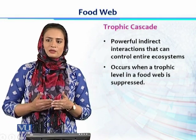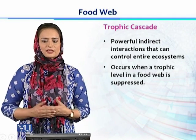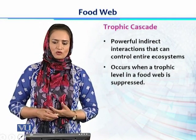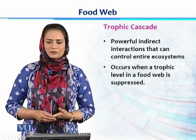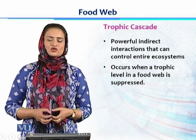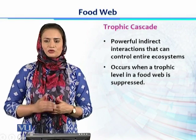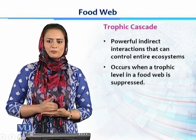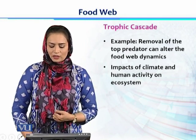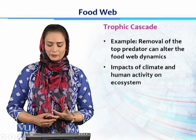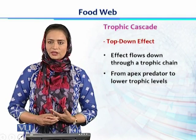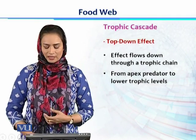Trophic cascade is actually a powerful indirect interaction which controls the entire ecosystem. The population size can be suppressed by different factors — certain climatic factors like temperature, water availability, increased predation, or topographic changes. If the population size is affected, then this effect will be transmitted through the entire food chain and food web. Removal of top predators can alter the whole food web dynamics. We divide this into two categories: the top-down effect and the bottom-up effect.